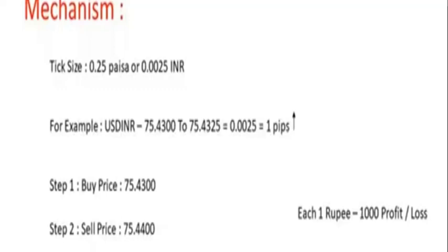The mechanism of trading currencies is slightly different from trading in stock futures because the tick size is different. For currencies the tick size is 0.0025, whereas in the stock market the tick size is 0.05 — that is 5 paise — and for currencies it is 0.25 paise. This is because volatility in currencies is much less, so they offer more leverage. For example, if USD/INR was at 75.43, the next tick would be 75.4325. In a trade example: you buy at 75.43 and sell at 75.44.